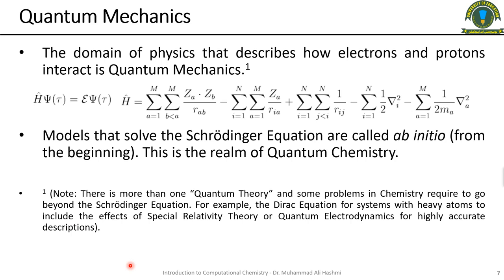Now we briefly introduce quantum mechanics. The domain of physics that describes how electrons and protons interact is quantum mechanics. Models that solve the Schrödinger equation are called ab initio methods, and this is the realm of quantum chemistry. Ab initio means 'from the beginning' — you calculate everything from scratch.